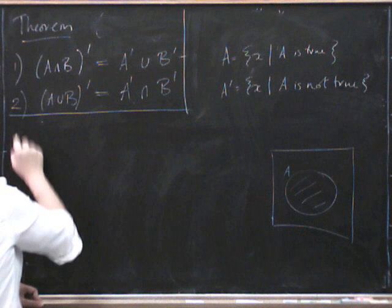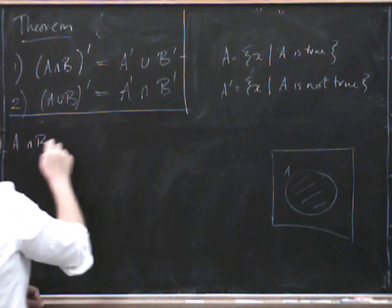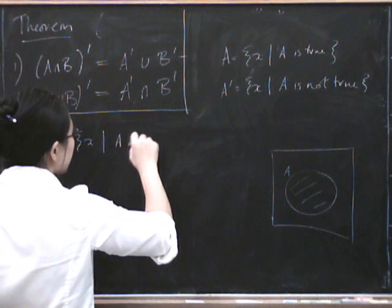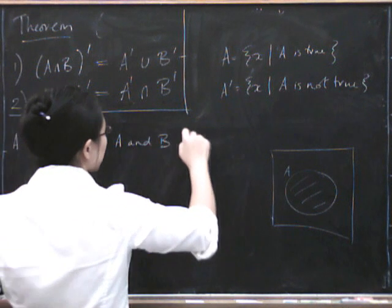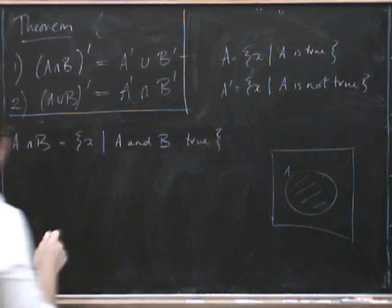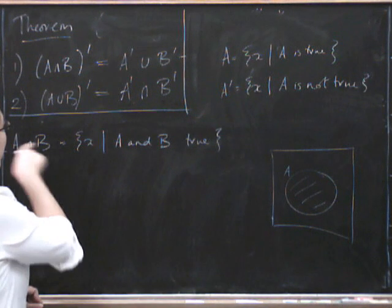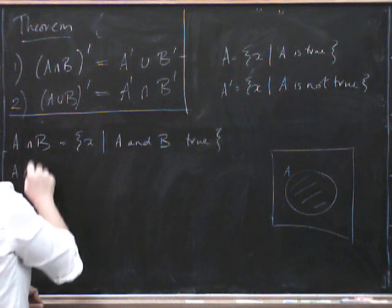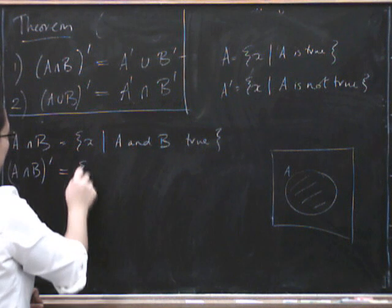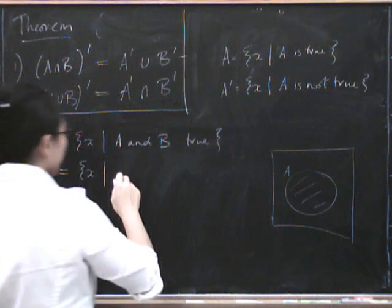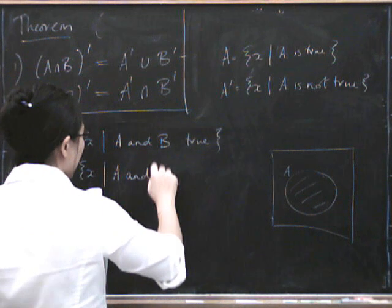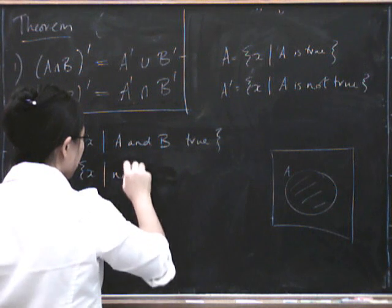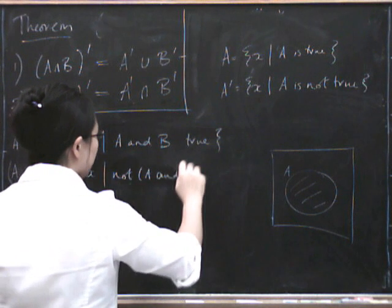So A intersection B is X such that A and B are true. So what's the negation of that? Then it's going to be the complement of A intersection B is all X such that A and B. We want the negation of that. So we can write it's NOT A and B.